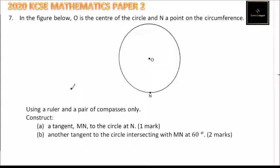This is question number 7, 2020 KCSE Mathematics paper 2. In the figure below, O is the center of the circle and N is a point on the circumference. So we have our circle here and the two points O and N.